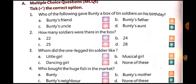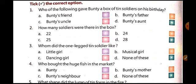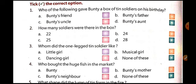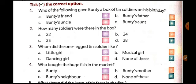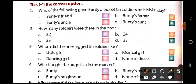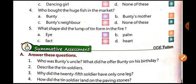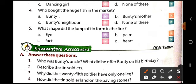Next are multiple choice questions. You don't have to copy them in your book, you need to fill them in your book. First: who gave Bunty a box of 10 soldiers on his birthday? The correct answer is Bunty's uncle. Second: how many soldiers were there in the box? The correct answer is 25. Third: whom did the one-legged tin soldier like? The answer is the dancing girl. Fourth: who bought the huge fish in the market? Option B is correct.